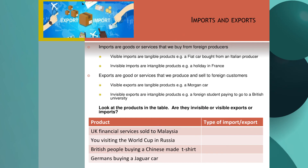Looking at imports and exports: imports are goods or services that we buy from foreign producers — they can be tangible or intangible, for example a car or a holiday. Exports are goods or services that we produce and sell to other countries — again visible or invisible, such as a car or a student paying to attend a British university. Pause the video, add imports and exports to your word bank, then complete the table below by deciding if the listed products are imports or exports. Copy the table and definitions into your books.